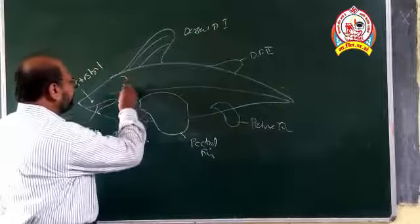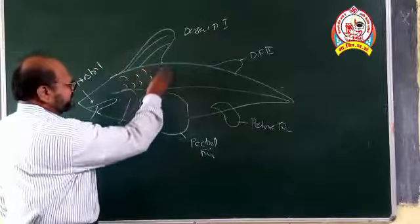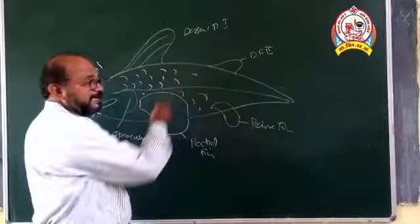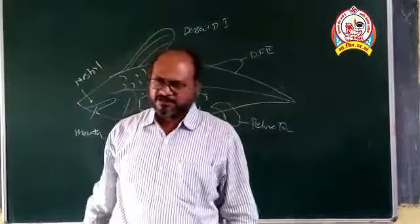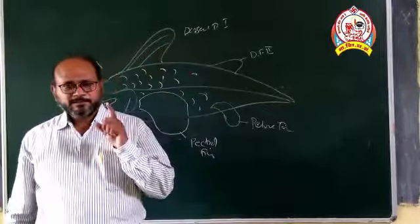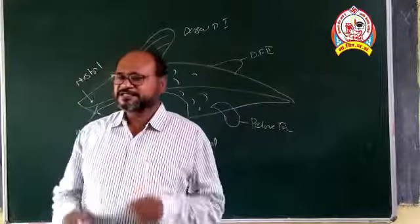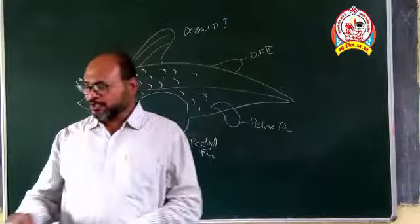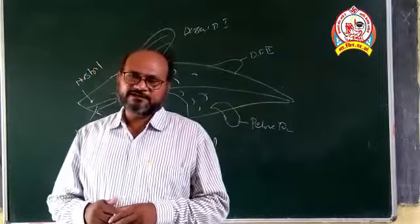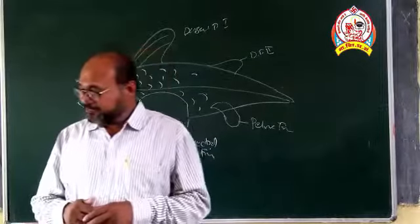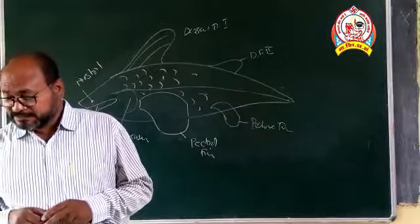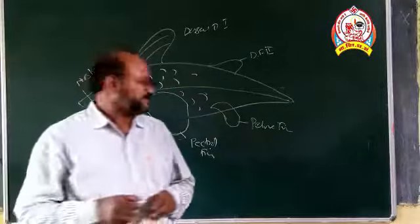On the exoskeleton, there are scales of three types. Number one, placoid scales are present generally in Scoliodon species. Cycloid scales are present in Catla catla species. Ctenoid scales are present in Cynoglossus species.